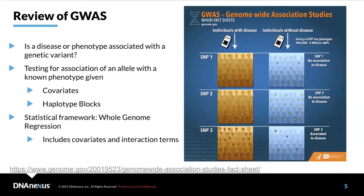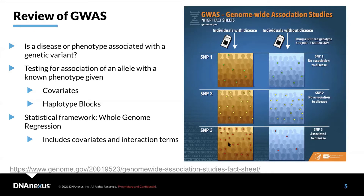A reminder of what genome-wide association studies are: we are interested in whether a disease or phenotype is associated with a specific genetic variant. Here you can see three different examples of single nucleotide polymorphisms — two have no association with disease, while one shows much more of the variant present in cases than in controls. We test for association of an allele with a known phenotype using covariates and haplotype blocks, with whole genome regression as the statistical method, including covariates and interaction terms.